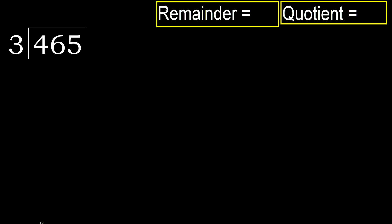465 divided by 3. 4 is not less, so with 4: 3 multiplied by which number is nearest to 4 but not greater? 3 multiplied by 2 is 6 — 6 is greater. 3 multiplied by 1 is 3 — 3 is not greater. 4 minus 3 is 1. Next.